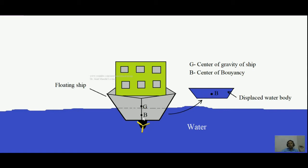The center of buoyancy is that point where the entire buoyant force acts. Buoyant force is a force which always acts against the action of gravity. The displaced water body's center of gravity is what the center of buoyancy is. The center of gravity of that displaced water body is center of buoyancy. Suppose the ship's center of gravity is at G.